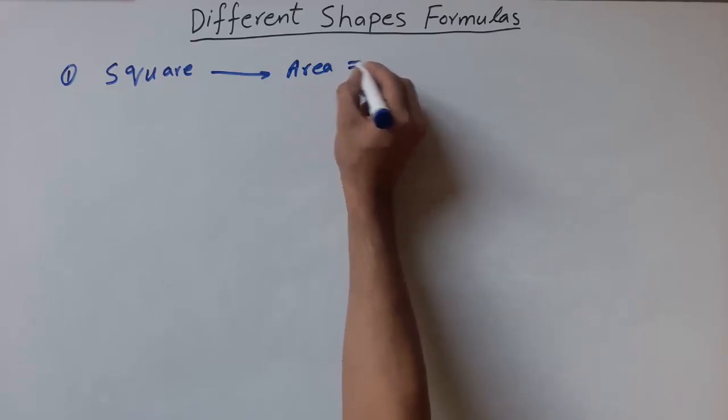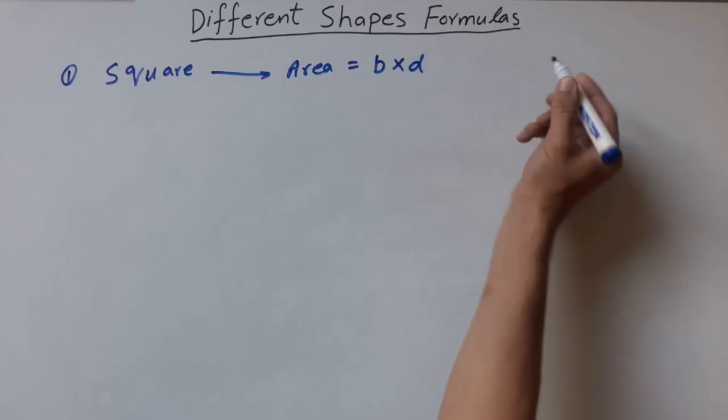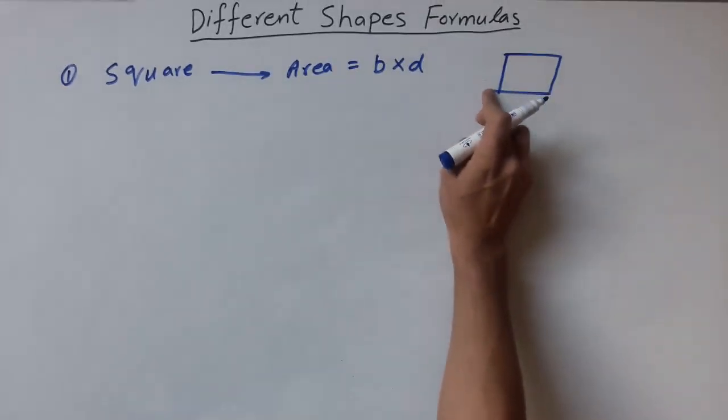Area of square is equal to B multiplied by D. This is a square, having all four dimensions equal.